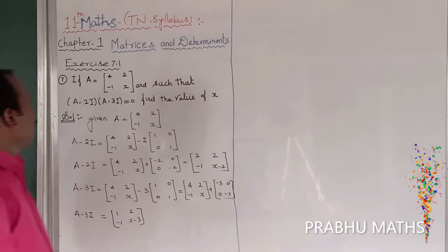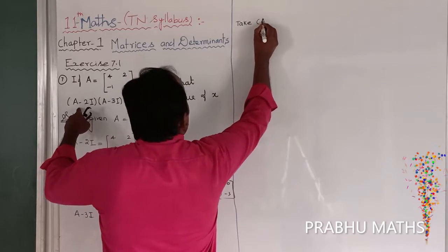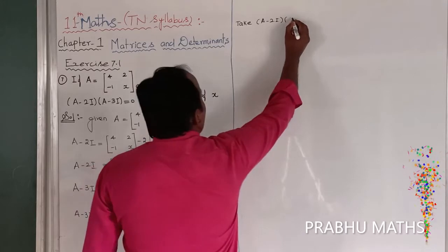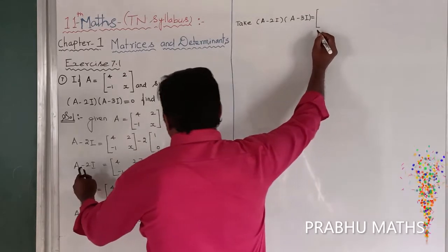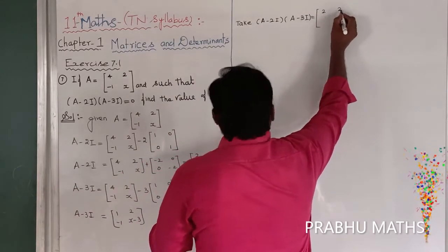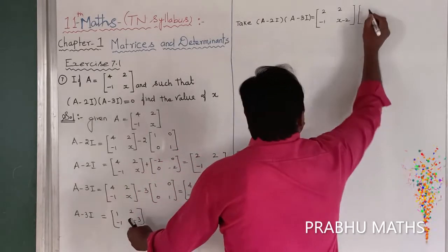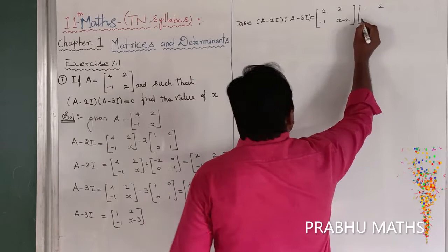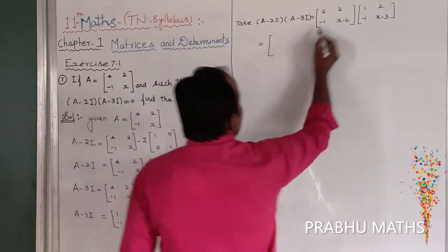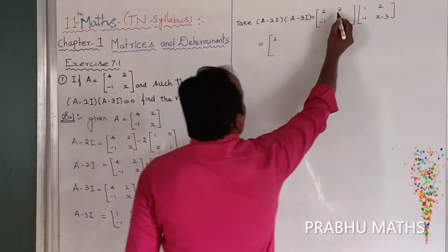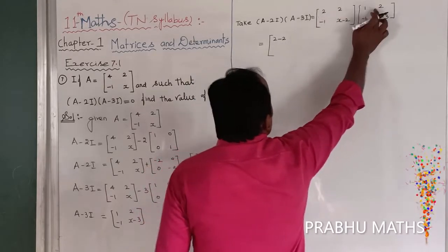Next, for this equation, taking the left-hand side: (A minus 2I) into (A minus 3I). So A minus 2I equals [2, 2; -1, x-2] and A minus 3I equals [1, 2; -1, x-3]. This is the matrix multiplication. So first row, first column: 2 into 1 plus 2 into minus 1.